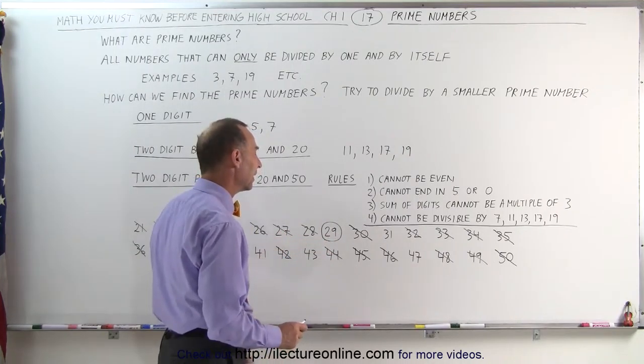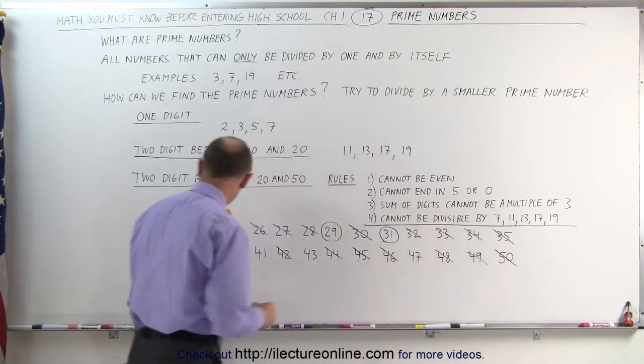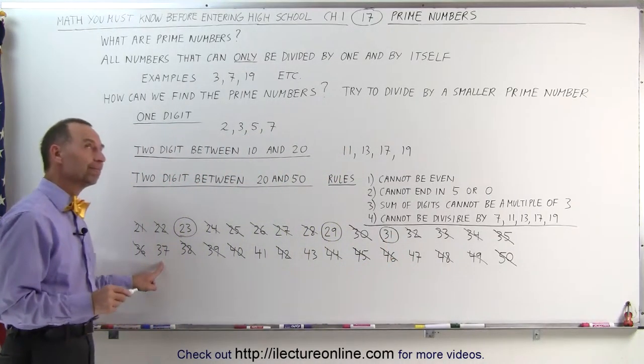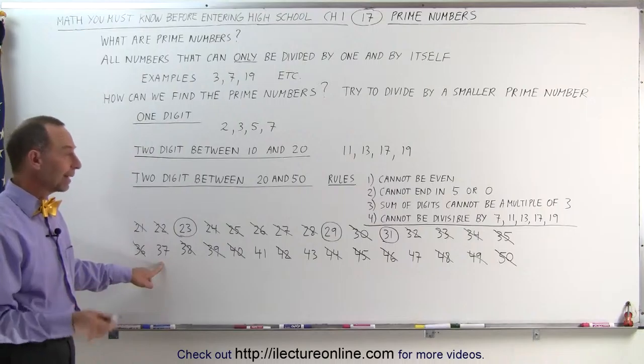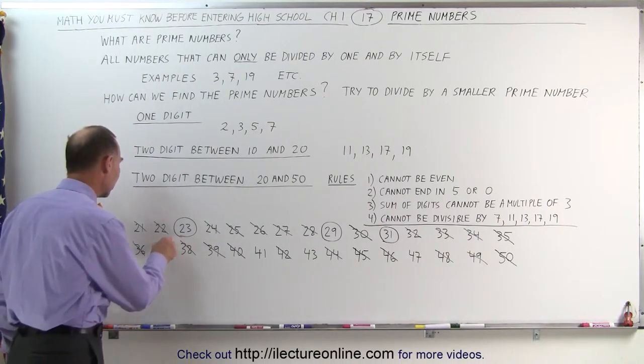31, the same thing, cannot be divided by any of those small numbers. That's a prime number. And let's come over here, the number 37. Now, divided by 7, by 11, by 13, by 17, nothing like that. So, there's another prime number.